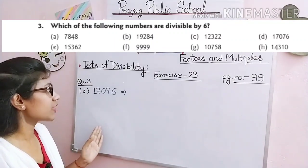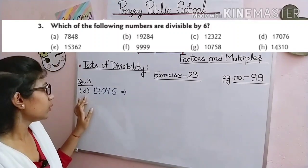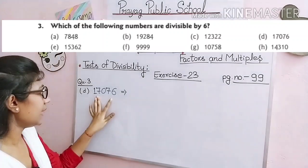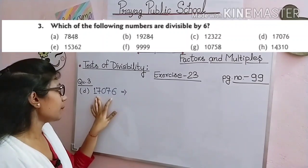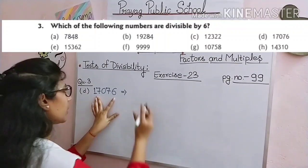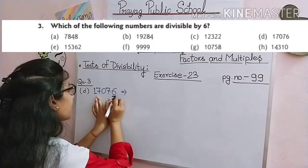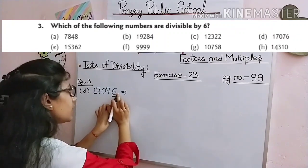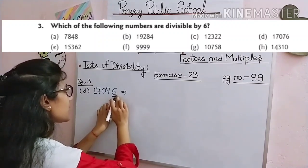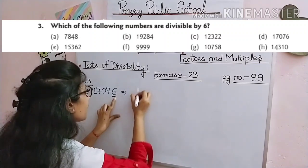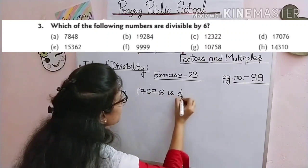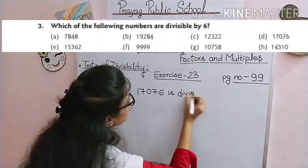Now let's look at a practice question. The number is 17,076. Is this number divisible by 6? How will we check? If the given number is divisible by both 2 and 3, only then this number will be divisible by 6.